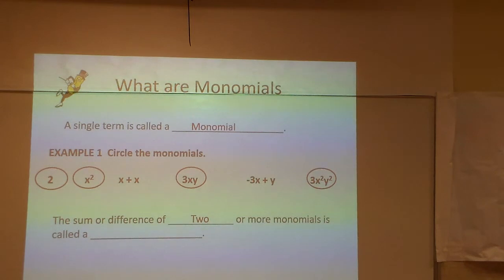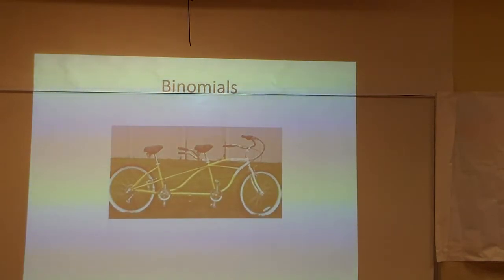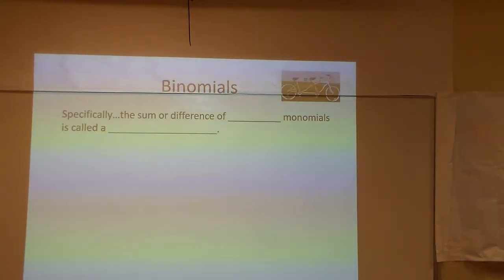The sum or difference of two or more monomials is called a polynomial. That's two or more. Specifically, binomials, I have a bicycle for two there. I have one of those at home, is a two. Bi is worth it for bicycle, so we put that on there. We have a two-seater, called a binomial.